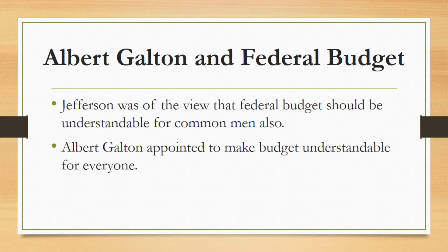Albert Gallatin and Federal Budget: Jefferson was of the view that the federal budget should be understandable to the common men also. Therefore, he appointed Albert Gallatin and gave him the task of making the federal budget understandable even to the common men, so that their feedback and suggestions could help in improving the budget further.